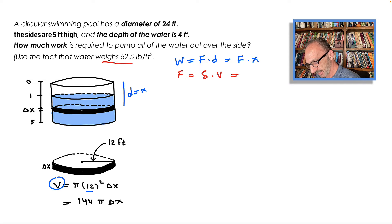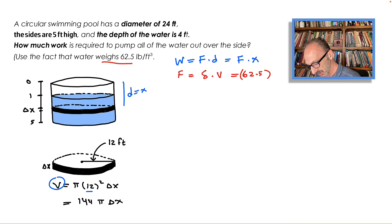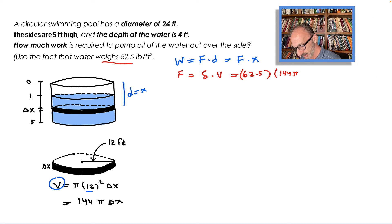If we multiply 62.5 times the volume, which is 144π Δx, we get 9000π Δx.